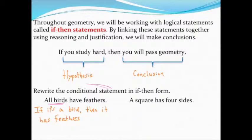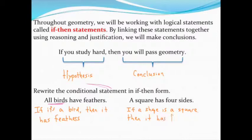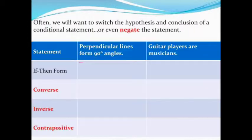Next up we have 'a square has four sides.' Again, phrase it in a way that makes sense without adding too many words but gets the if-then format. I came up with: 'if a shape is a square, then it has four sides.' Sometimes you start to write and realize it's going to sound awkward, so rephrase it another way.